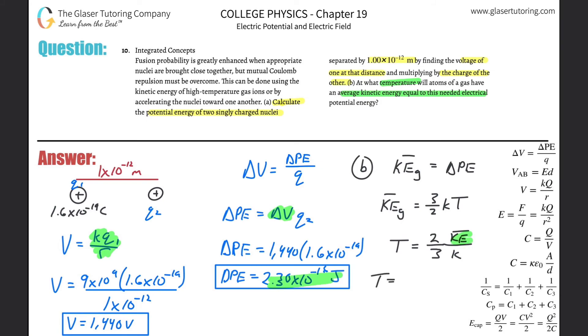Now I'm just going to calculate. It's basically 2 times 2.3×10⁻¹⁶, all divided by 3 times the Boltzmann constant, which is about 1.38×10⁻²³. So we have 2 multiplied by that value, then divide by 3 times 1.38×10⁻²³. I get a value of about 1.11×10⁷ Kelvin.